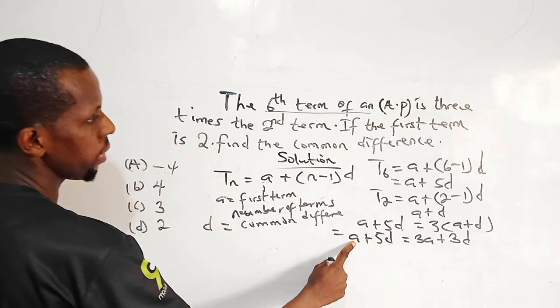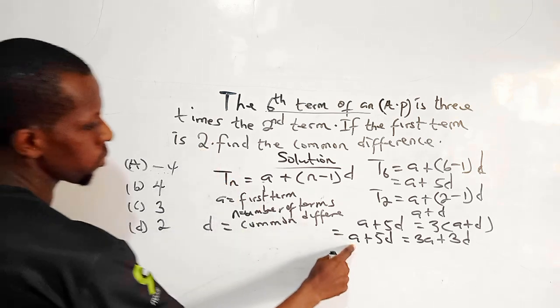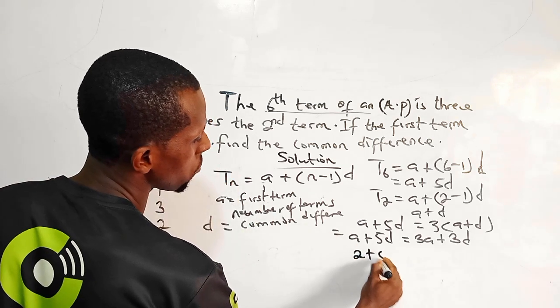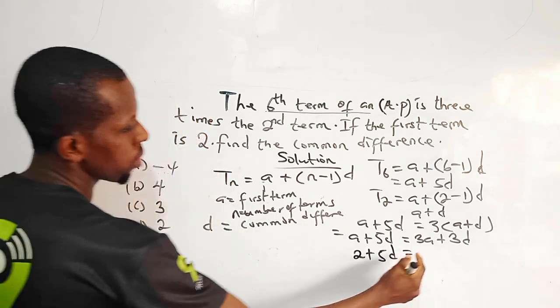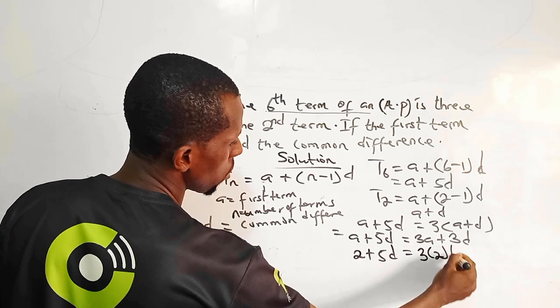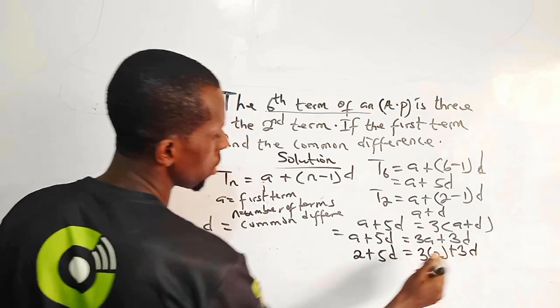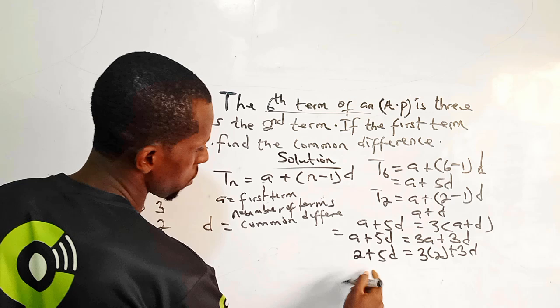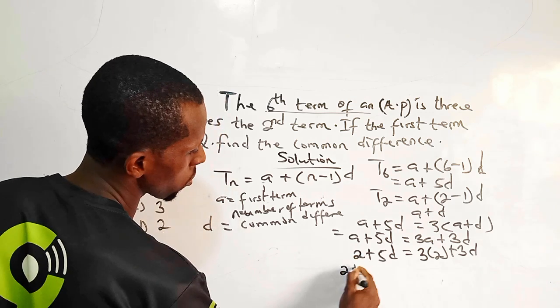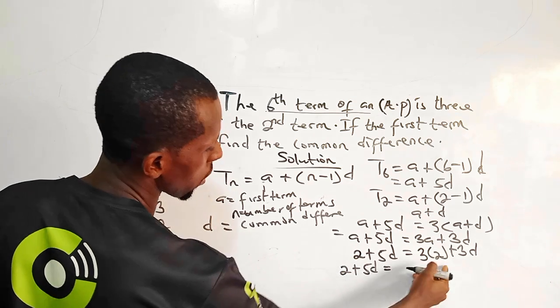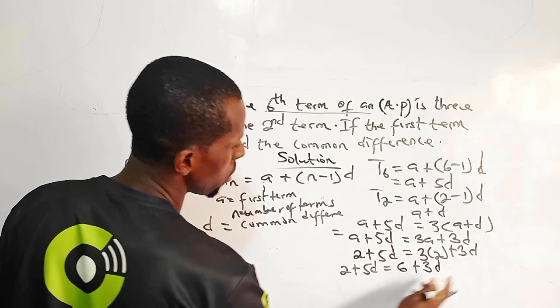So I will represent my a with 2. So I will say 2 plus 5d equals 3a means 3 times 2 plus 3d. So here I have 2 plus 5d equals 3 times 2 is 6 plus 3d.